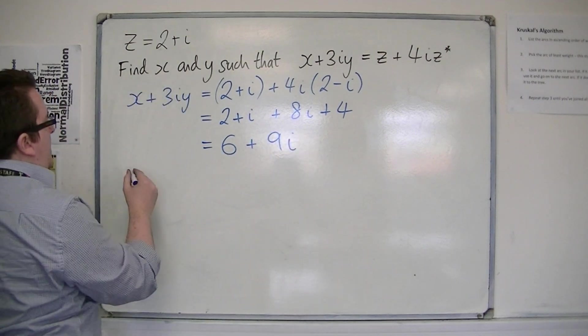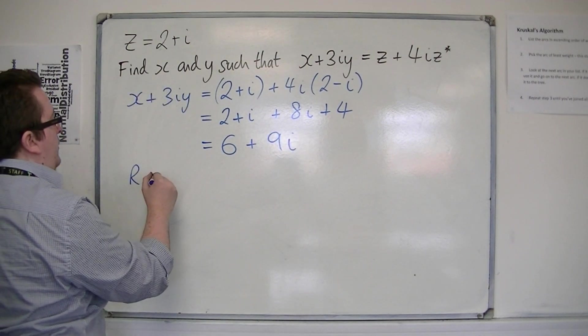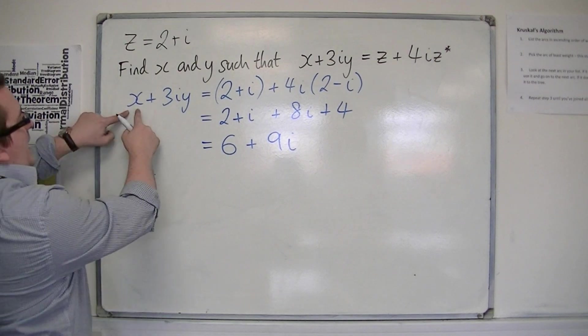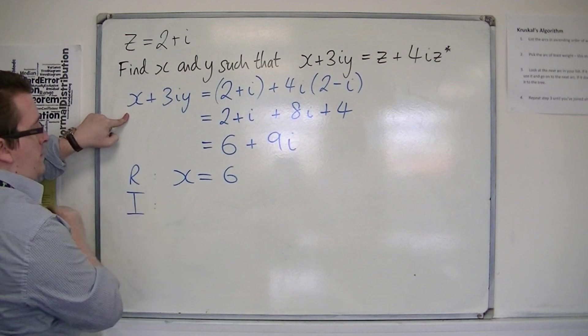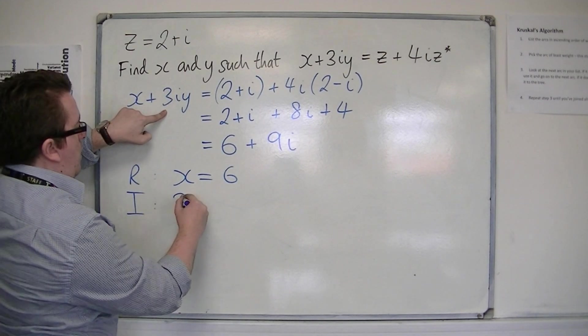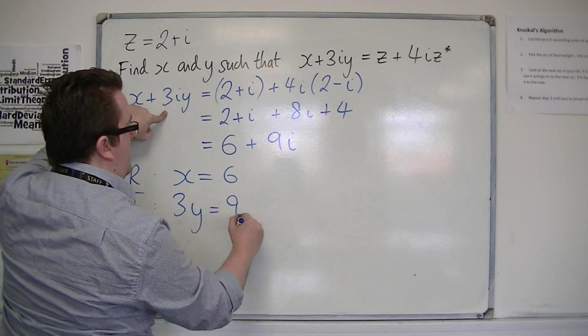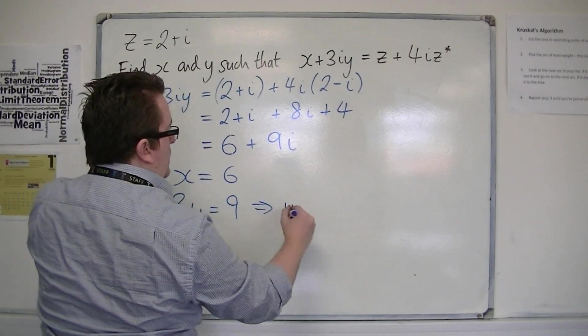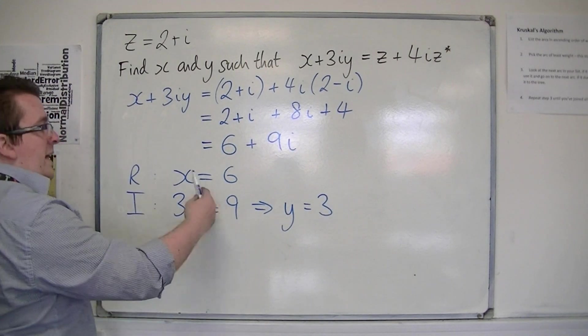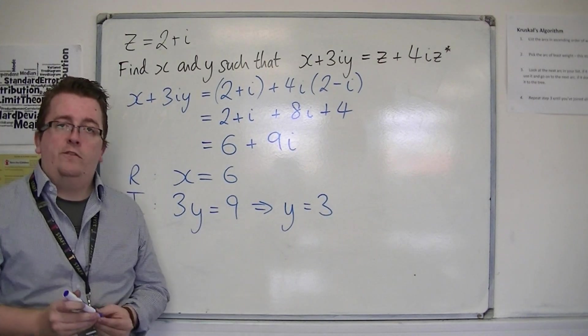So now we can equate the real parts, so that would be x is equal to 6, and if we equate the imaginary parts, then 3y is equal to 9, so y is equal to 3. OK, so that gets me the two values that I was looking for.